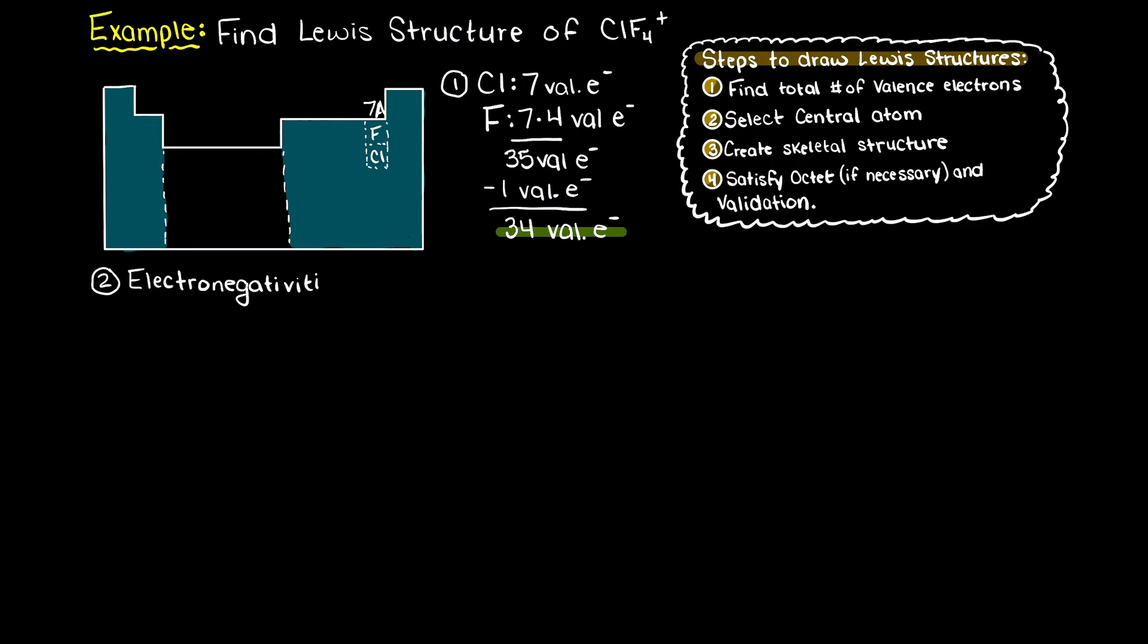Next we need to find what is going to be our central atom. I have listed the electronegativities of both chlorine and fluorine here. Remember that we typically use our least electronegative atom as our central atom. Therefore, it is clear that chlorine is going to be the central atom in this compound.